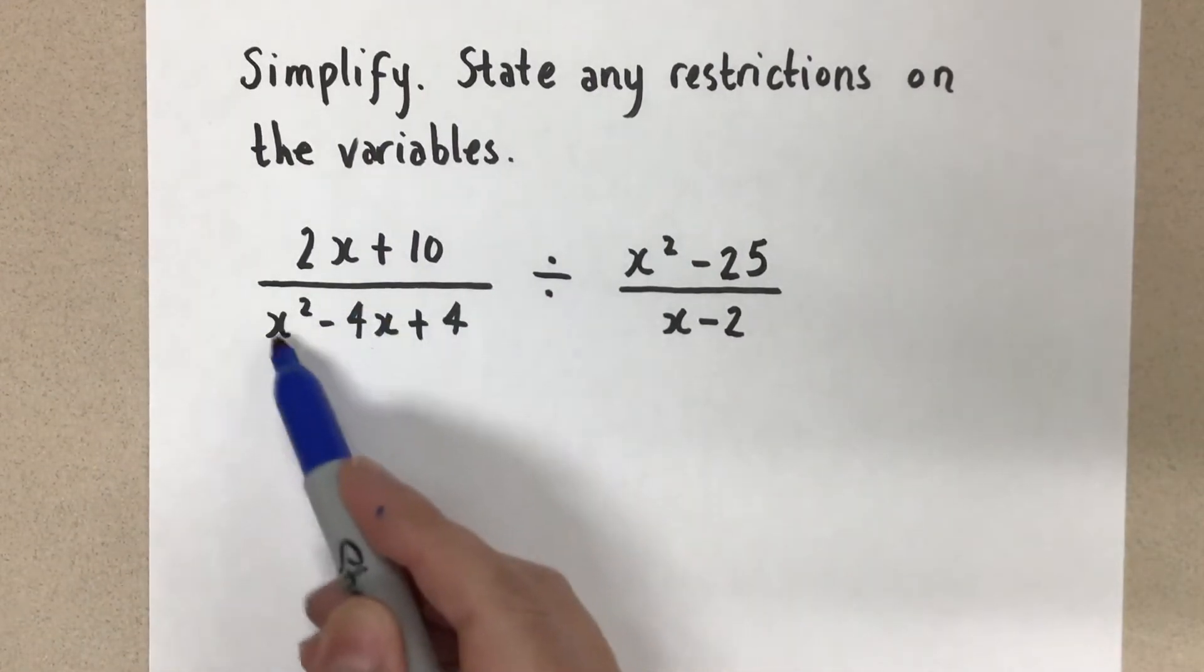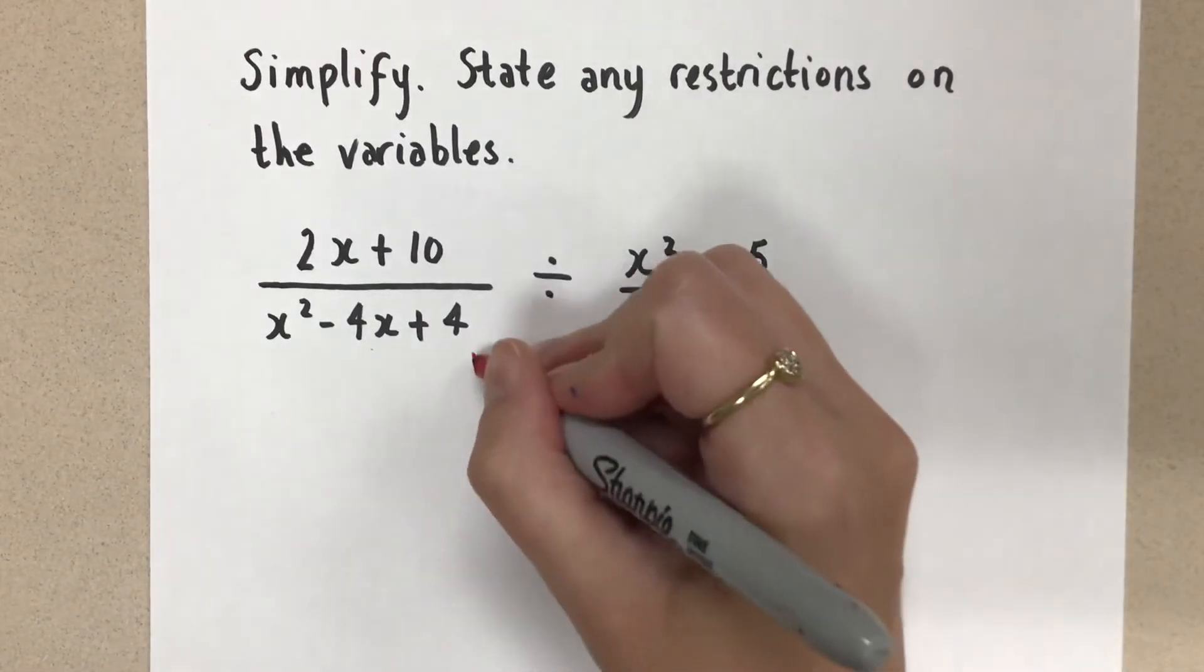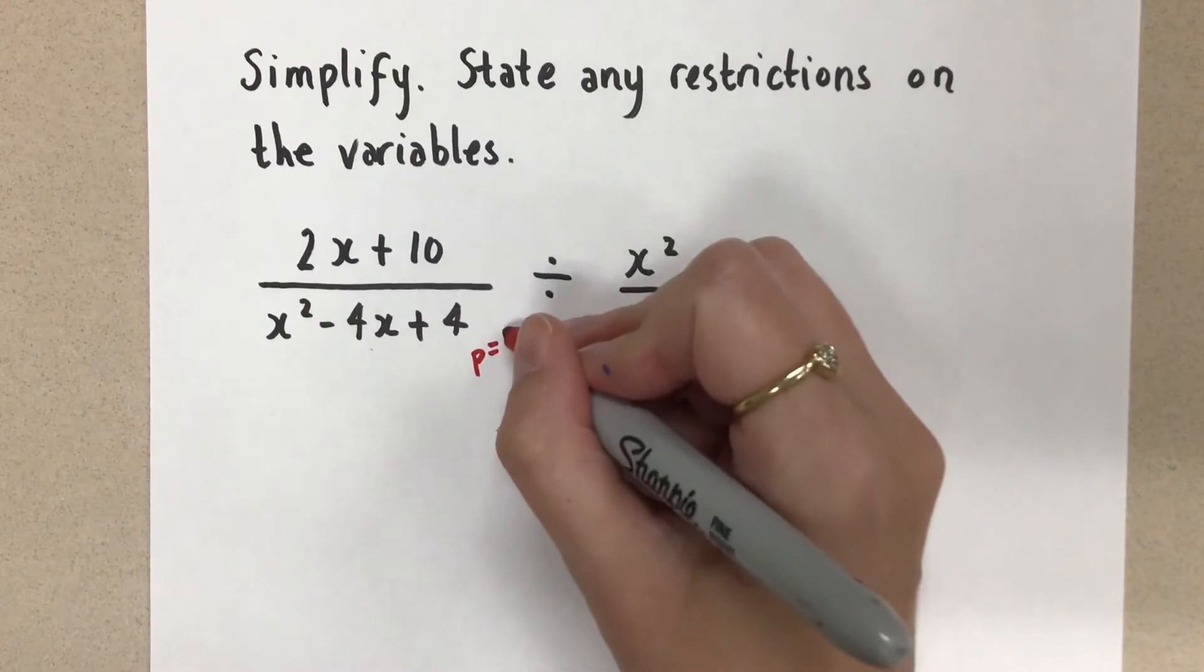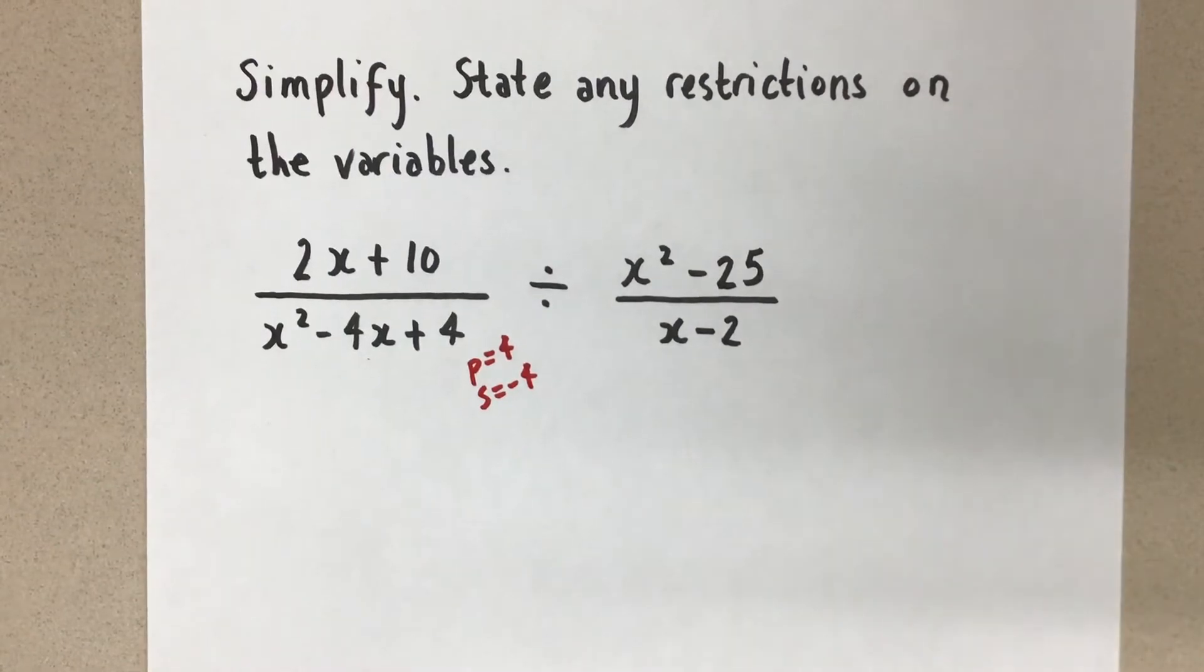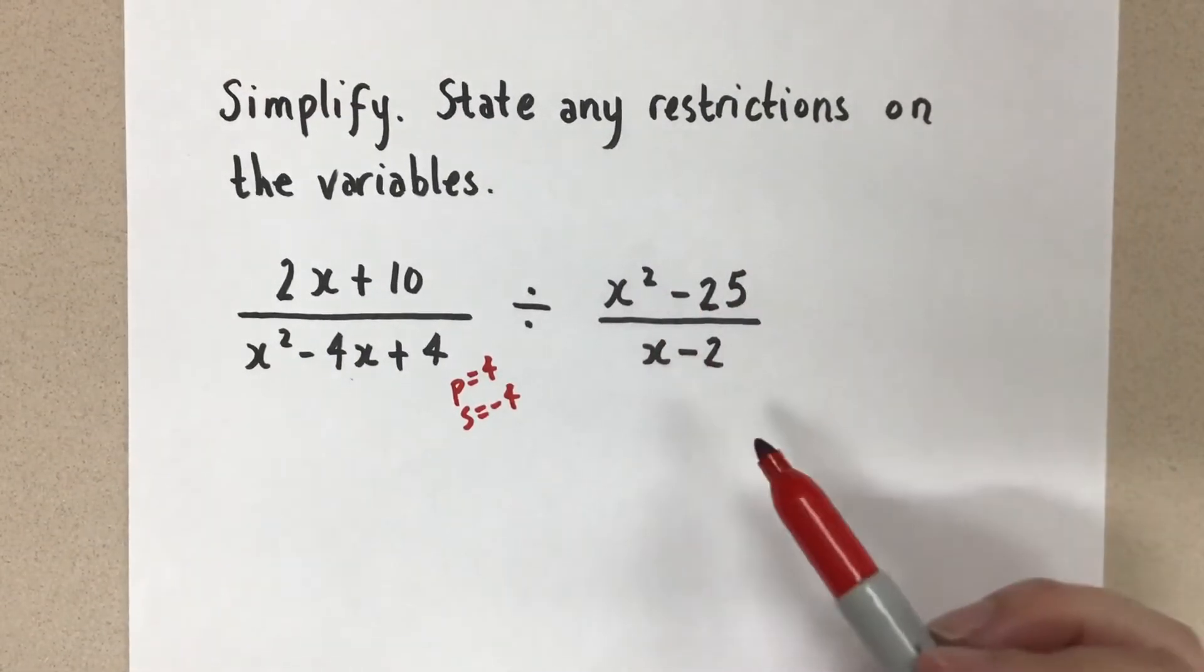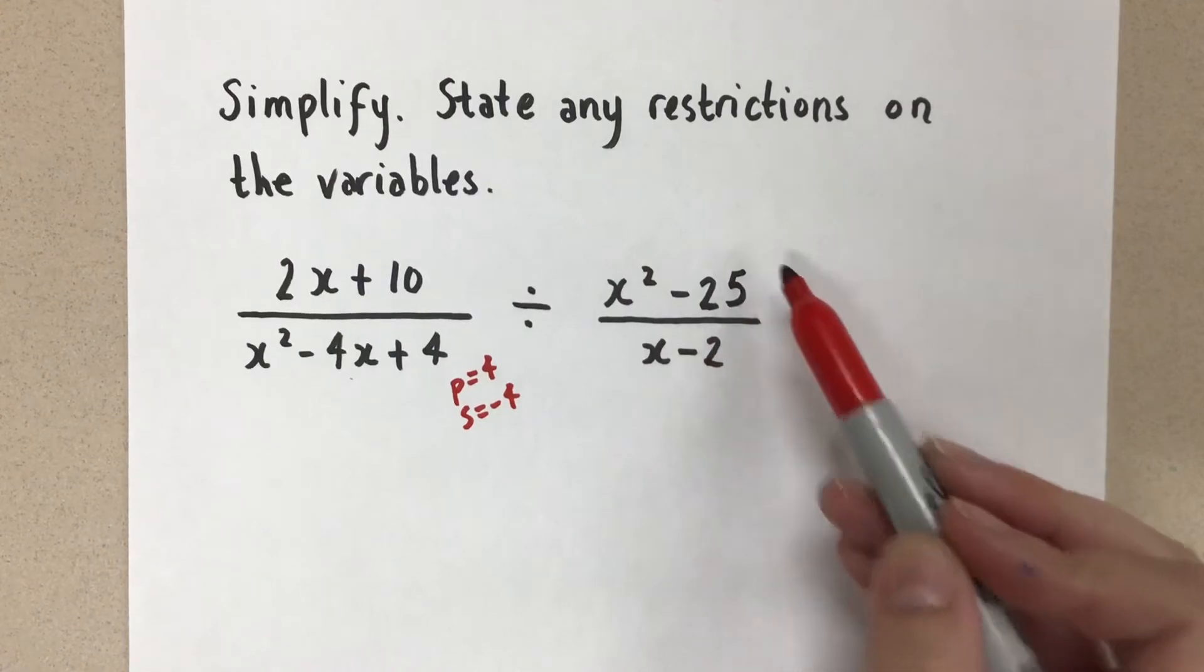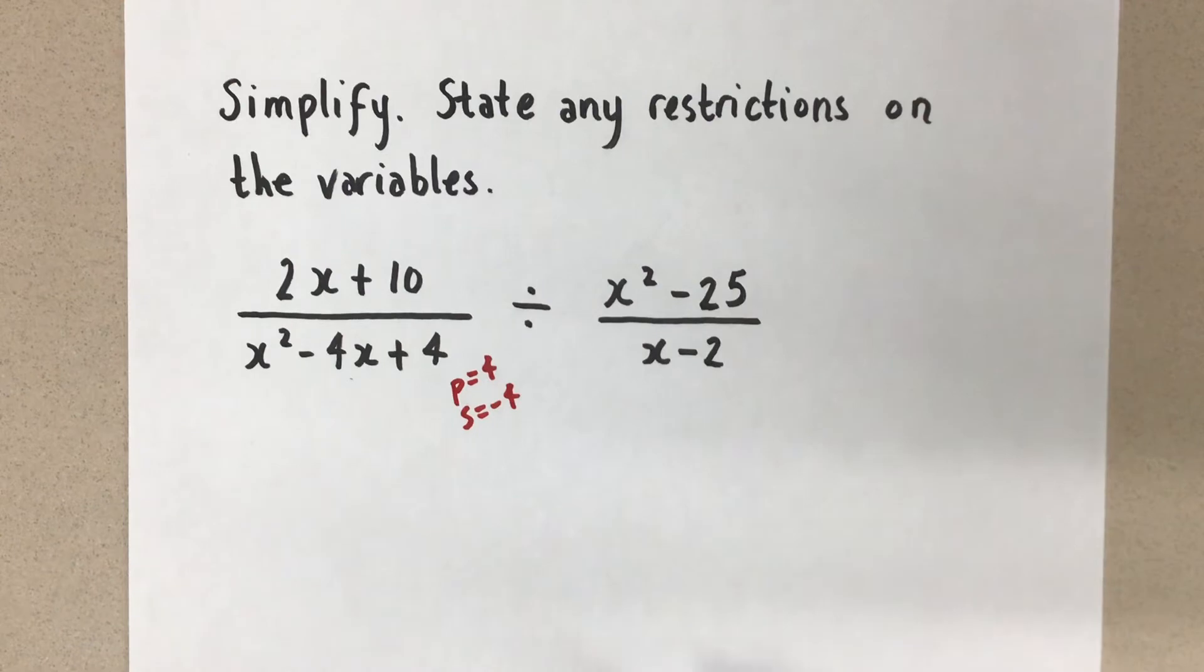And this denominator here, that's a quadratic expression, and it's a simple trinomial. I'm going to factor it with a product sum. So it's a product of positive 4, sum of negative 4, and I'm going to use that to factor. This x squared minus 25, that's a difference of squares, so the 25 is 5 squared. And then this one, I don't factor that at all. There's nothing to do there.